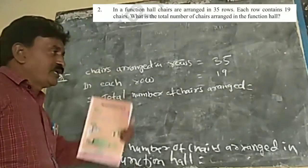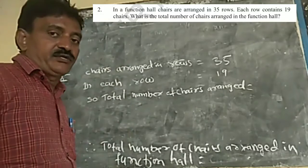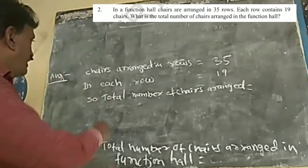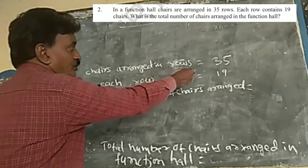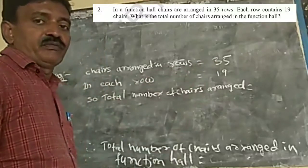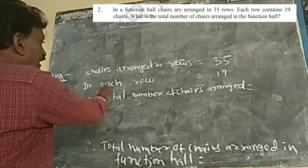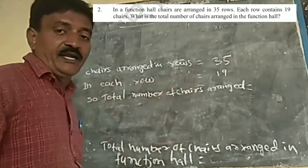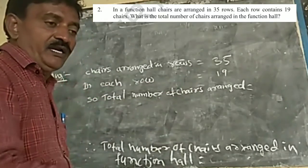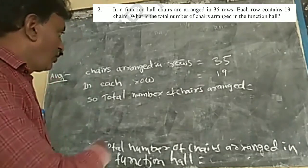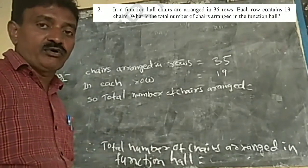See, in a function hall, there are a number of chairs and rows. The answer is, chairs arranged in rows are 35. There are 35 rows in the function hall. In each row, chairs arranged are 19. Each row has 19 chairs arranged. So total, the number of chairs are how many? This is the question.